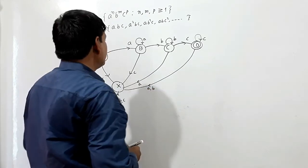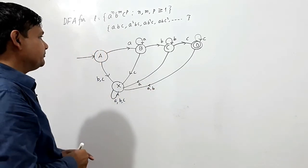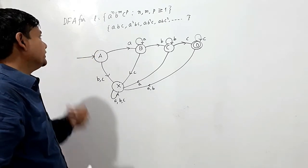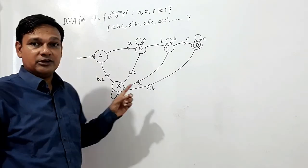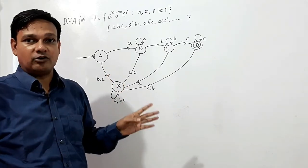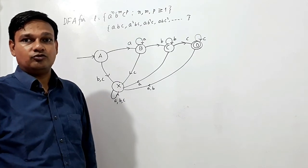So this is the required DFA which will accept all the strings of the form a to the power n, b to the power m, c to the power p, such that n, m and p are always greater than or equal to 1.